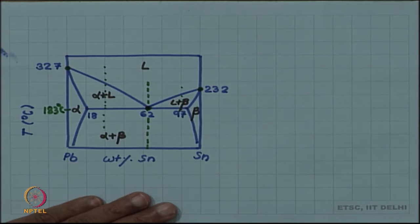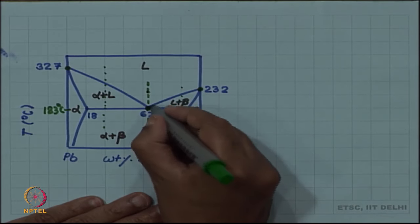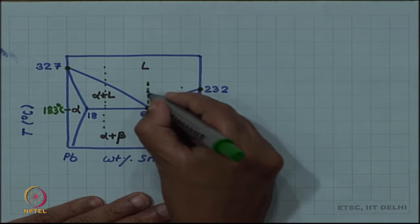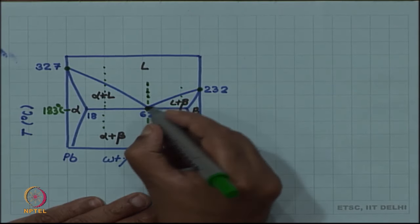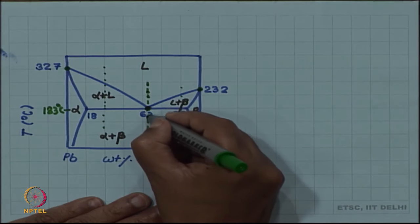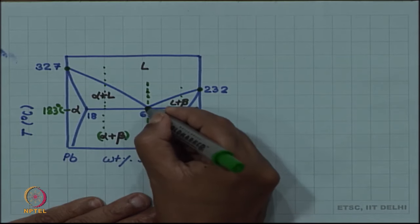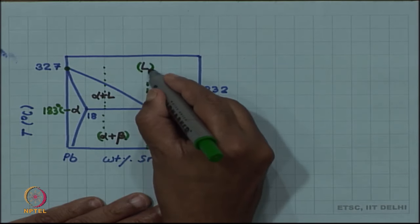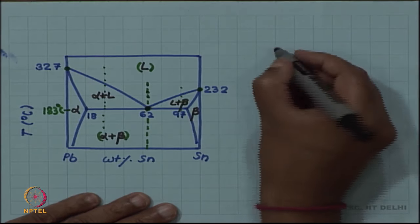If we now cool this alloy from liquid, then it will remain liquid, liquid will thermally contract, viscosity will increase and all that. But at 183 degree Celsius, below 183 degree Celsius you see that it is alpha plus beta and above 183 degree Celsius it is liquid. So the solidification happens at one fixed temperature of 183 degree Celsius, just like for a pure element.